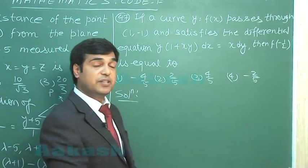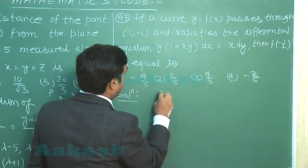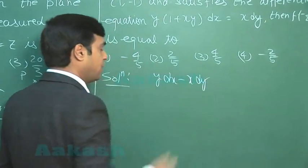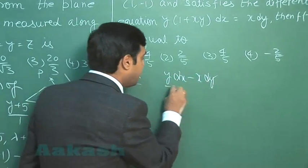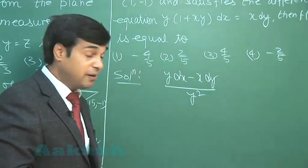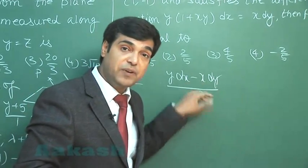We can simply solve it using inspection method. We can see this is as y dx minus x dy. For the purpose, y dx minus x dy, we need to divide with y² to the equation. This is clear, y dx minus x dy, so that I can read it as d(x/y).